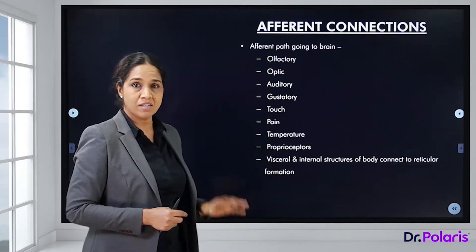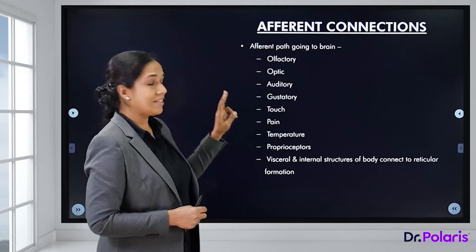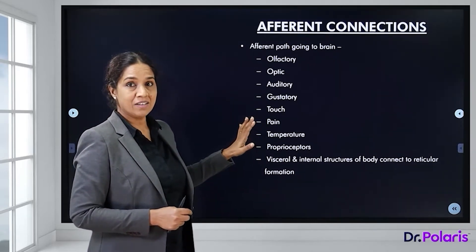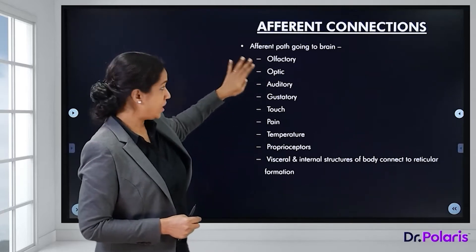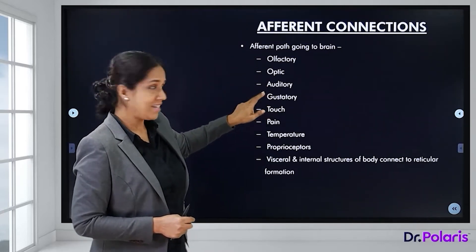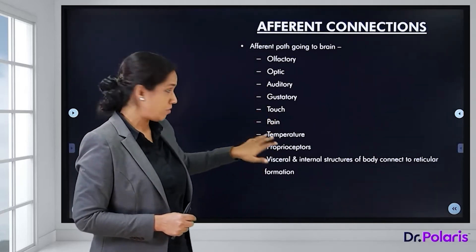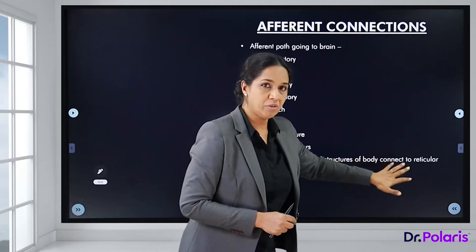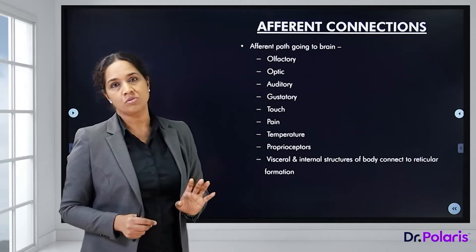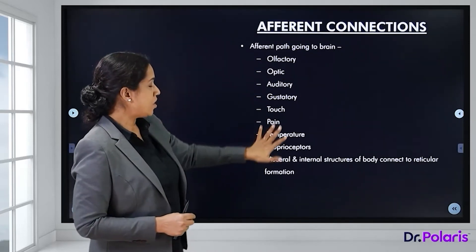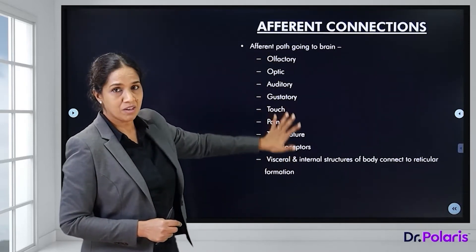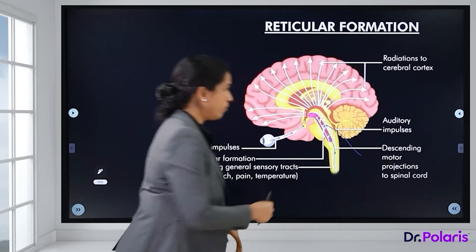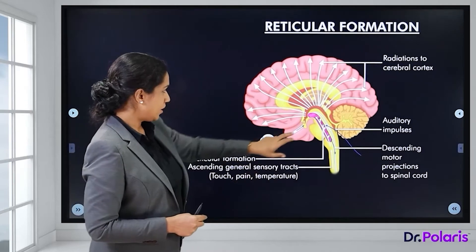In a more organized way: efferent fibers going to the brain from all sensory centers — olfactory, optic, auditory, gustatory, touch, pain, temperature, proprioceptors, visceral, and internal body structures — are all connected to the reticular formation. All these fibers heading to the brain also connect with the reticular formation.